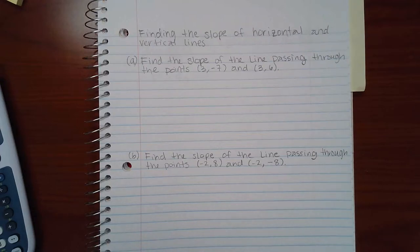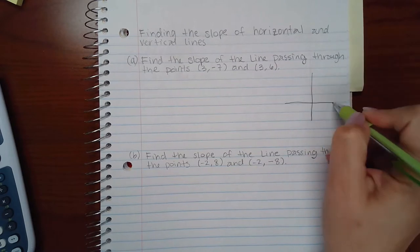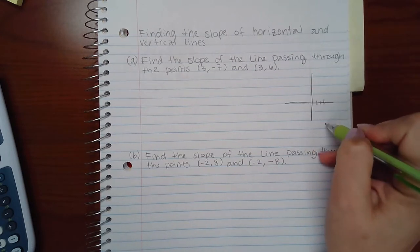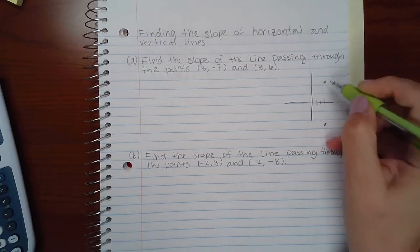This topic is finding the slope of horizontal and vertical lines. We don't technically know whether they're horizontal or vertical just by looking at it unless you plot them. So if I were to plot these points, 1, 2, 3 and negative 7 would be down here and 3 and positive 6 would be up there.